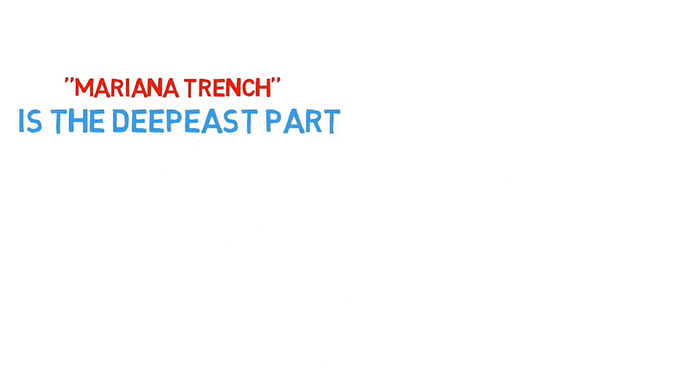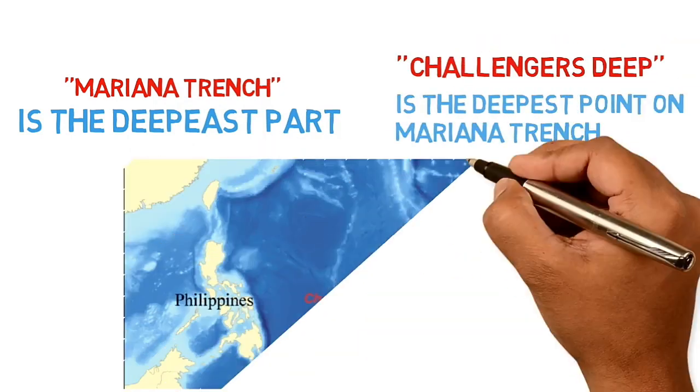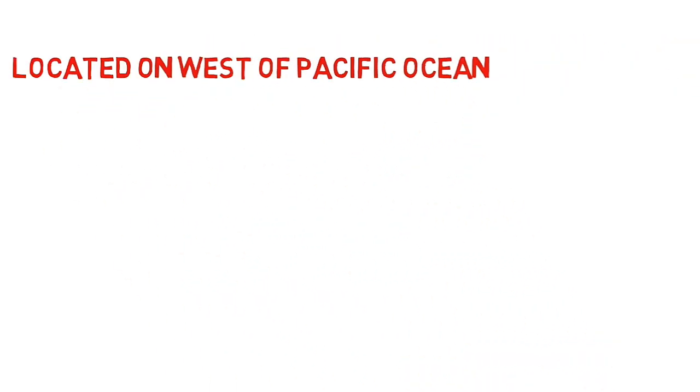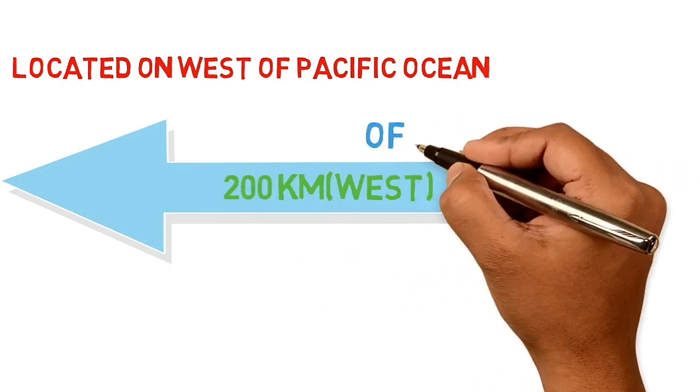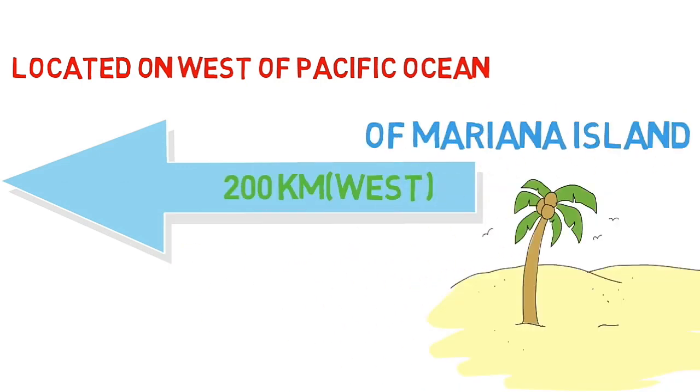The Mariana Trench is the deepest part of the world's ocean, and Challenger Deep is the deepest point. It is located in the western Pacific Ocean, approximately 200 kilometers west of the Mariana Islands.